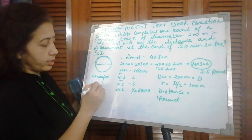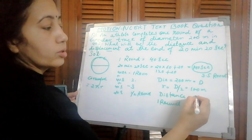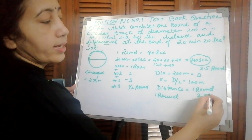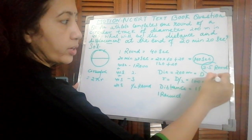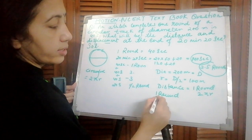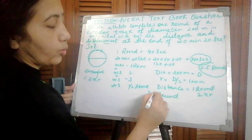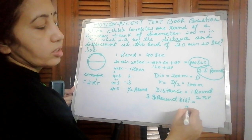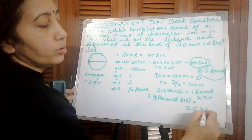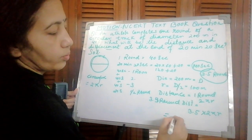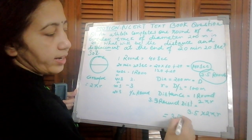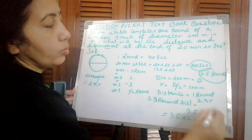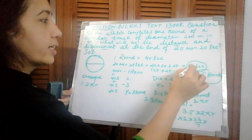So one round distance is 2πr. So 3.5 rounds distance, how much will it be? Total distance is 3.5 round distance. That is 3.5 into 2πr, which equals 3.5 into 2 into 22 by 7 into r. R we calculated, that is 100.